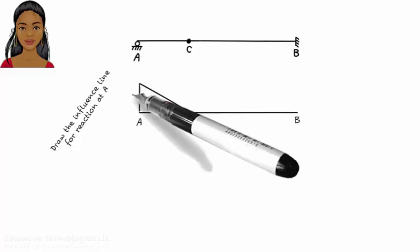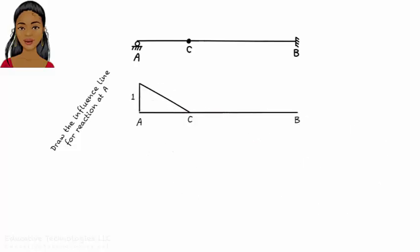It is important to note that when drawing influence lines for statically determinate beams, we treat the segment as straight bars unable to bend. That is, it might be tempting to draw the influence line for reaction at A like this,